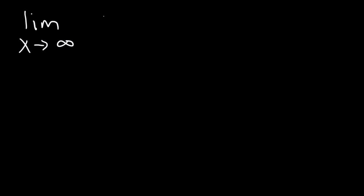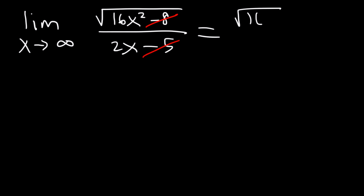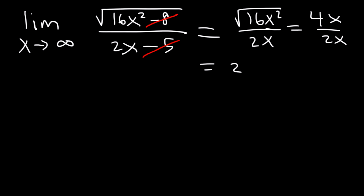What is the limit as x approaches infinity of the square root of 16x squared minus 8 divided by 2x minus 5? When x is very large, only the most significant terms remain. 8 and 5 are insignificant. So this expression becomes equal to the square root of 16x squared divided by 2x. The square root of 16 is 4, and the square root of x squared is x. So 4x divided by 2x is 2.